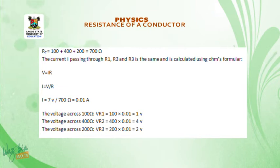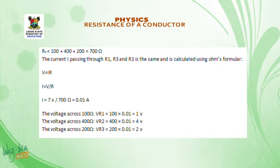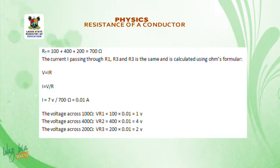We can now find the voltage across each resistor. Voltage across the 100 ohm resistor: 100 × 0.01 equals 1 volt. Voltage across the 400 ohm resistor: 400 × 0.01 equals 4 volts. Voltage across the 200 ohm resistor: 200 × 0.01 equals 2 volts. Adding 1 plus 4 plus 2 gives 7 volts — matching the given potential difference.